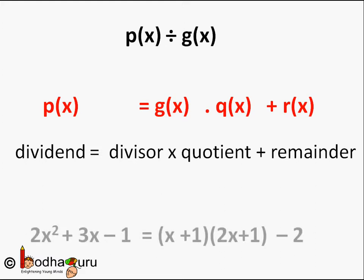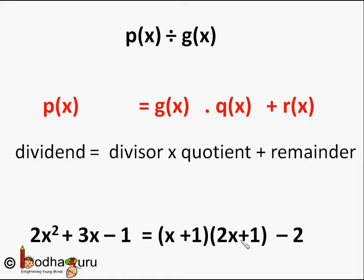For example, we saw in the earlier video: 2x² + 3x - 1 divided by x + 1 gives a quotient of 2x + 1 and a remainder of -2. So we wrote it as 2x² + 3x - 1 = (x + 1)(2x + 1) - 2.